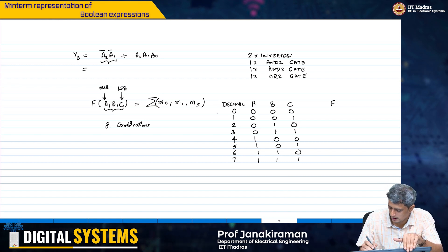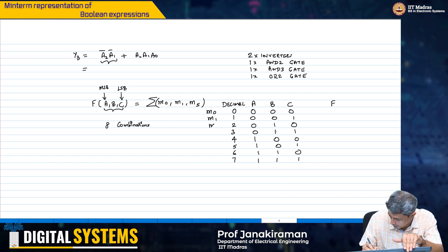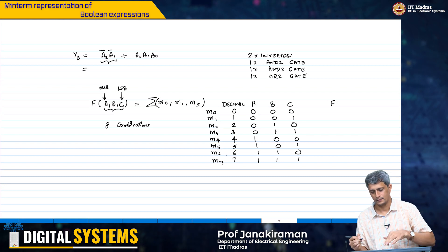So, this basically corresponds to M0, M1, M2, M3, M4, M5, M6 and M7.